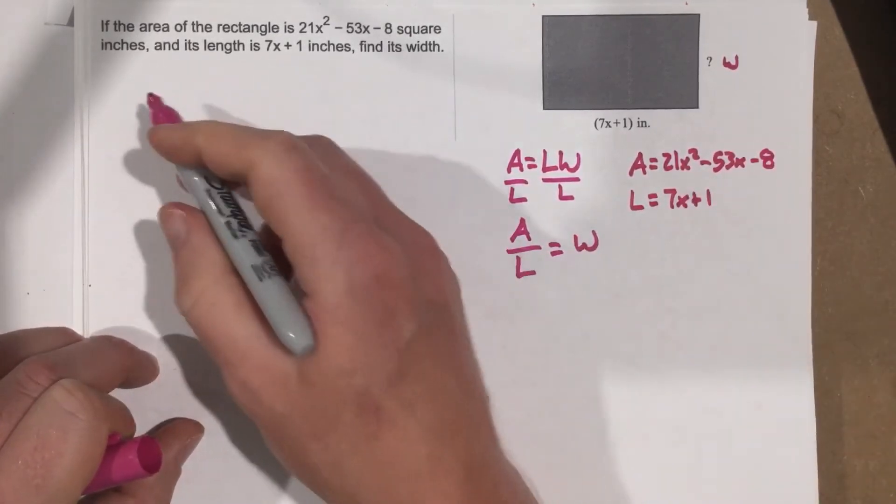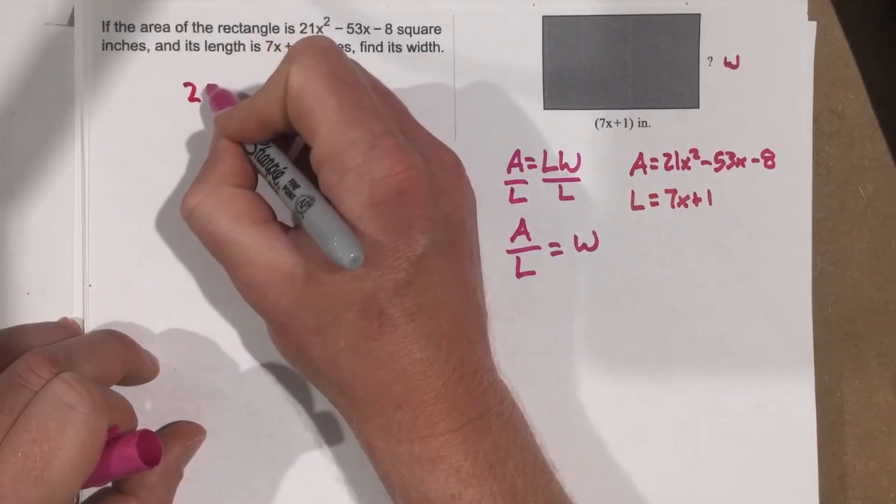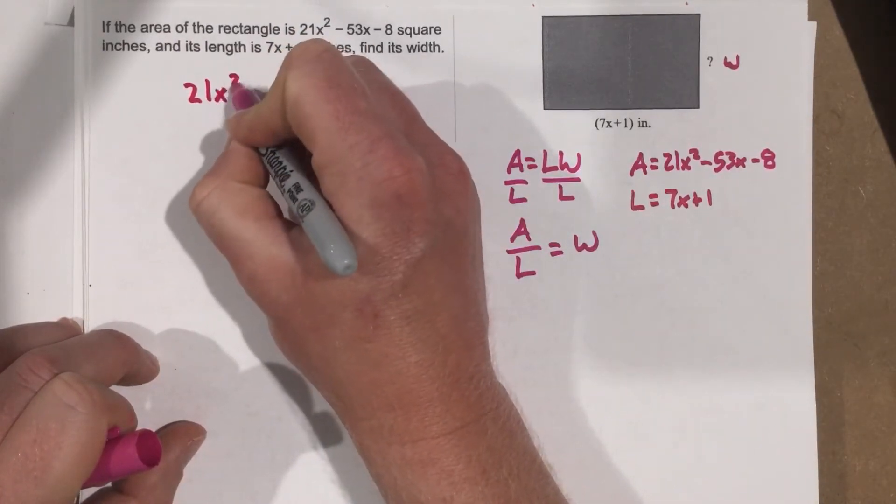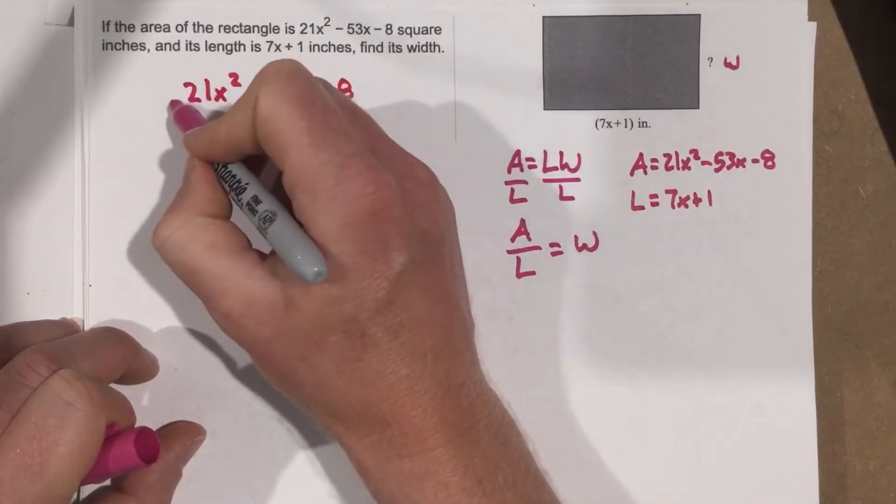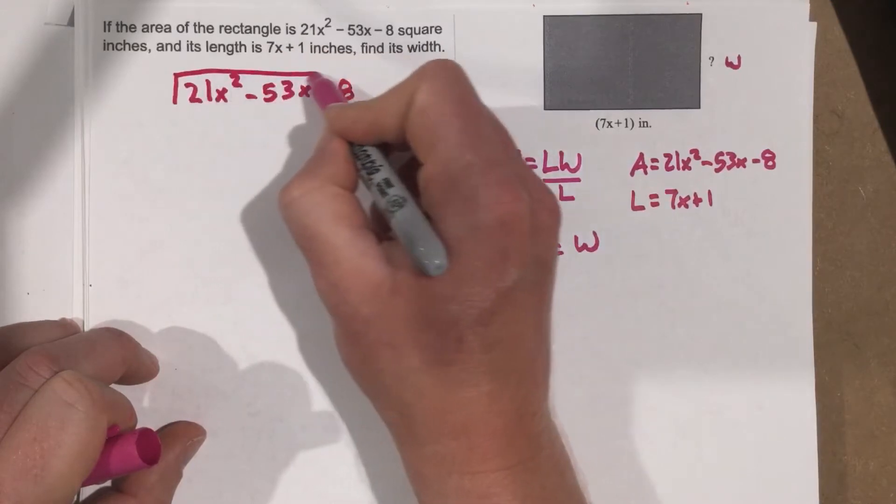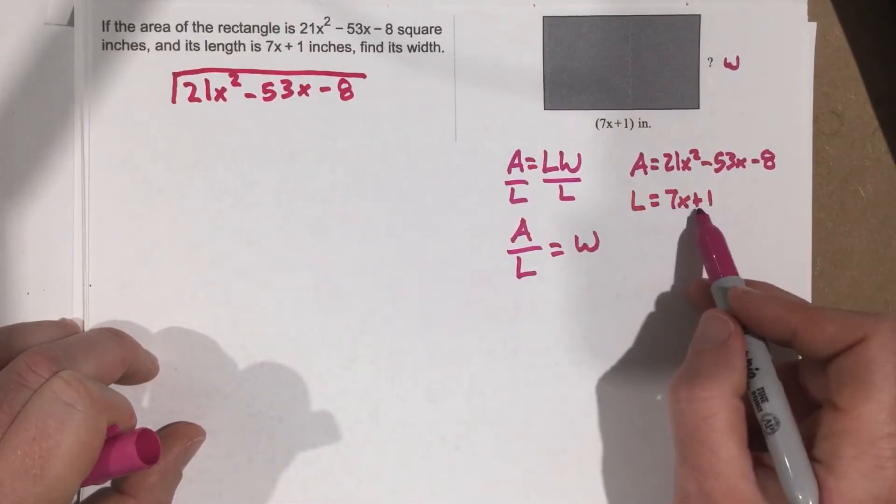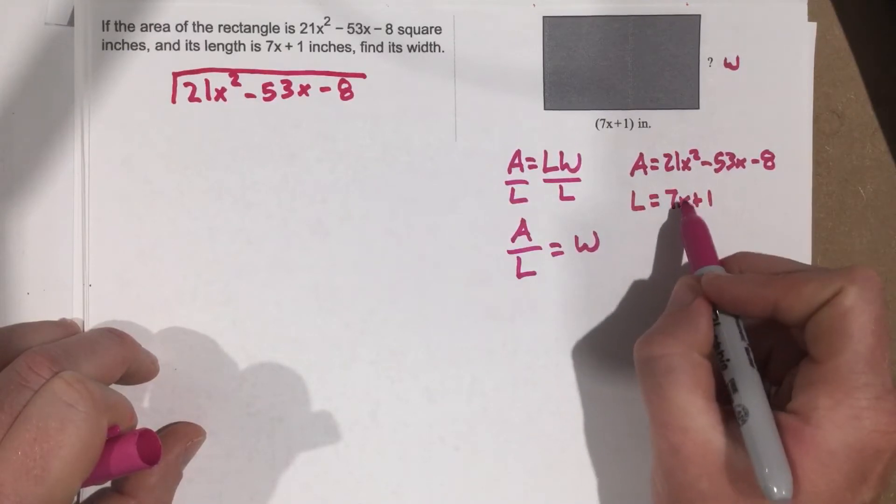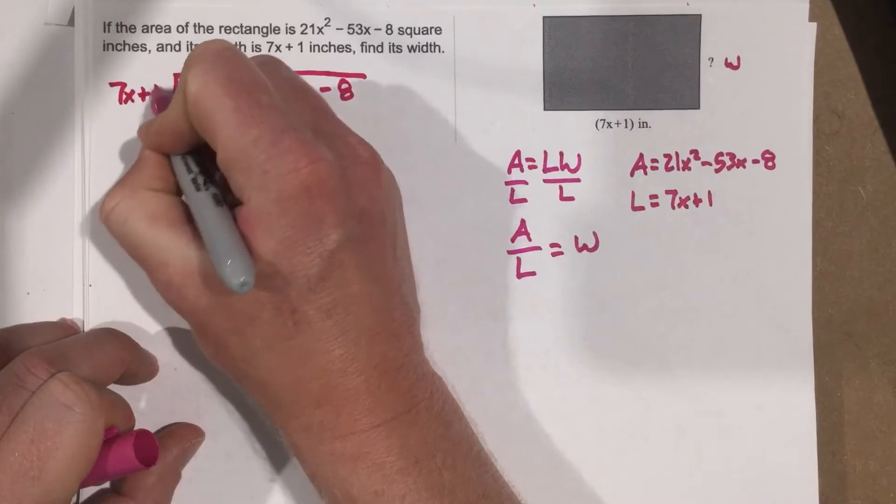So let's bring this over to the left side here, and I'm going to write 21x squared minus 53x minus 8. That's what I'm going to be dividing here. And then I'm going to divide with 7x plus 1, and I know I have to use long division because I have a leading coefficient here.